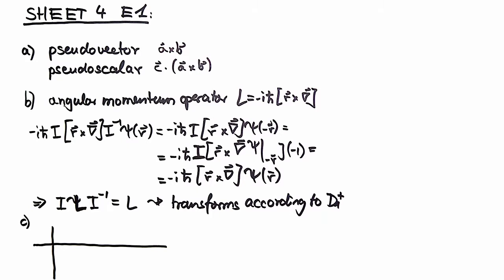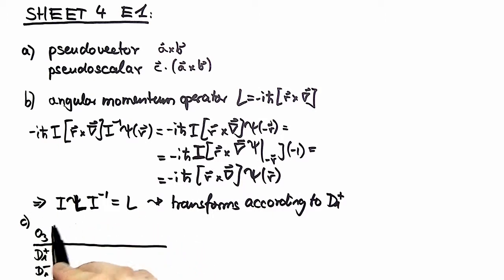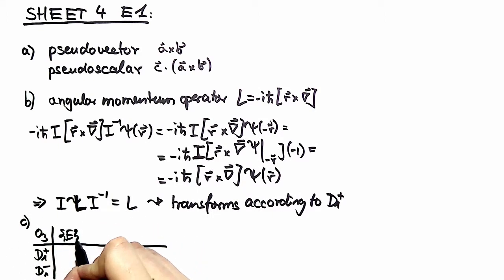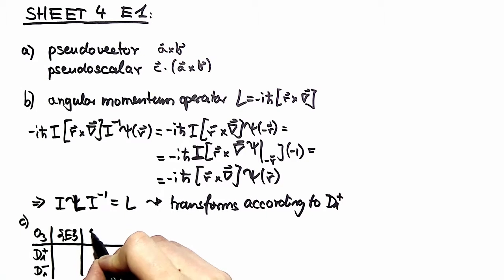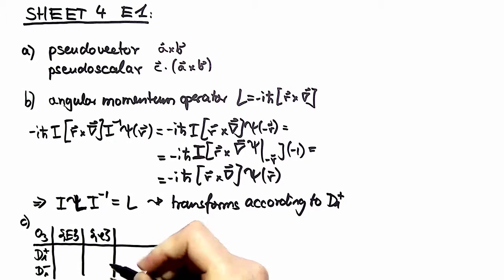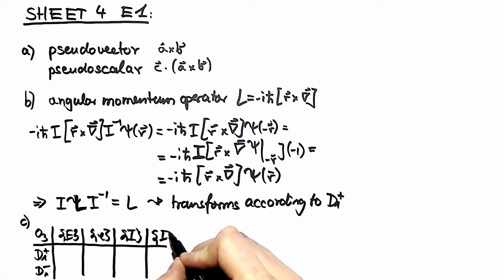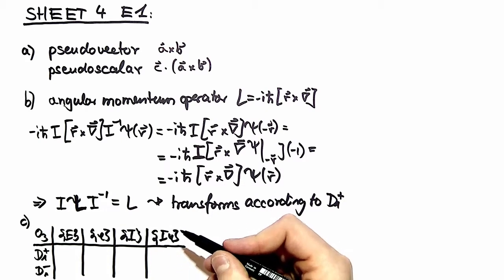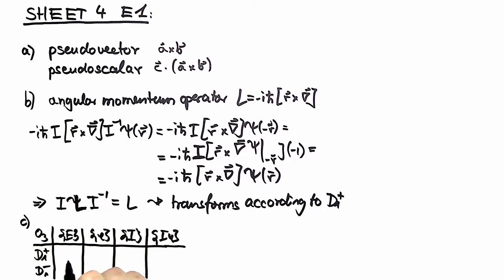When you remember how you constructed character tables, you saw there is always an identity representation and an inversion representation. We see if this is also true for O3. We have the elements of SO3, namely the identity and the rotations about an angle phi. Then you have the elements of i times SO3, namely the inversion times rotations about an angle.